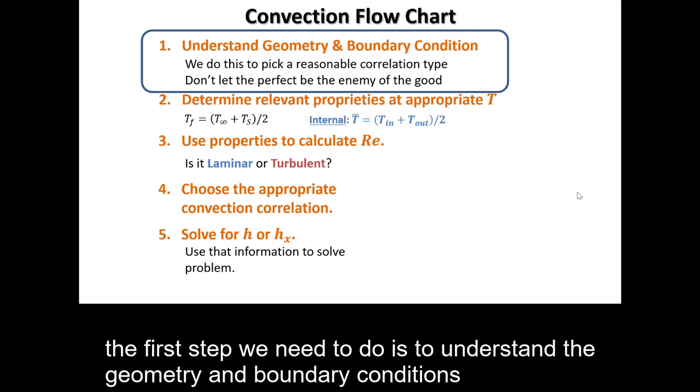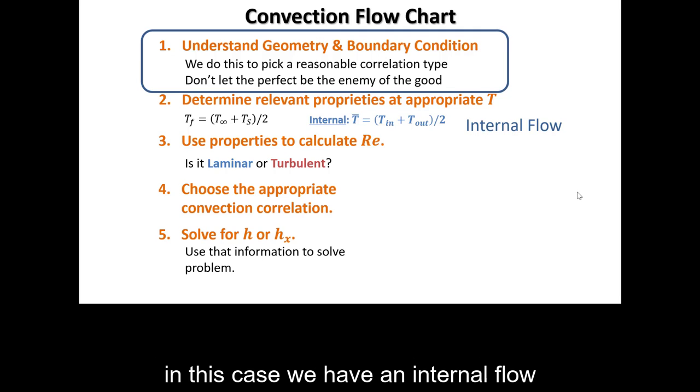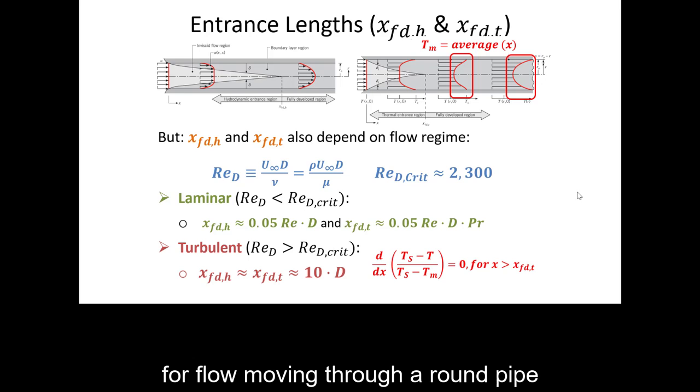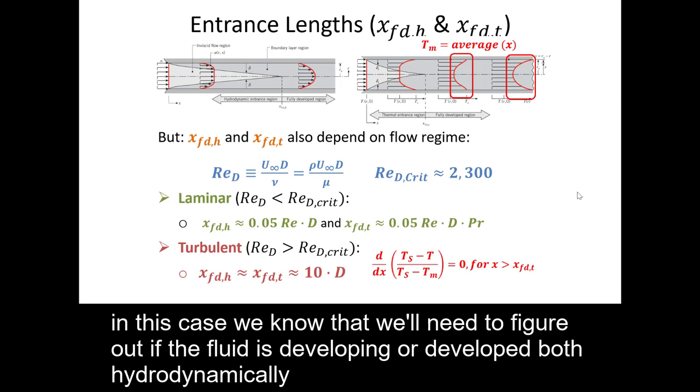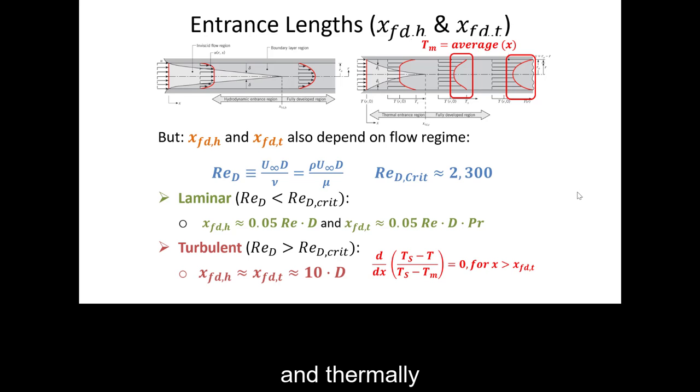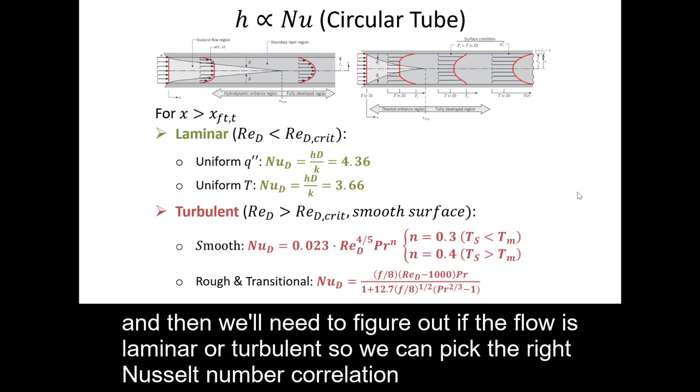The first step we need to do is to understand the geometry and boundary conditions. In this case, we have an internal flow with a constant surface temperature for flow moving through a round pipe. In this case, we know that we'll need to figure out if the fluid is developing or developed both hydrodynamically and thermally. And then we'll need to figure out if the flow is laminar or turbulent so we can pick the right Nusselt number correlation.